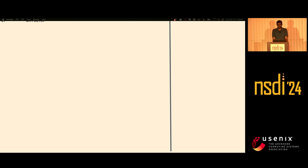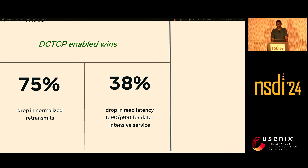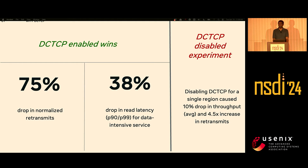Now, this is what we saw once we rolled DCTCP out across our entire fleet. From a network perspective, the retransmission rate had a significant drop of around 75%. Looking at one latency-sensitive service as an example, we saw a 38% drop in P90 and P99 latencies. We even conducted a reverse experiment — we disabled DCTCP across an entire region and saw a significant increase in retransmissions as well as a drop in throughput. You can find the details of this and other results in our paper.